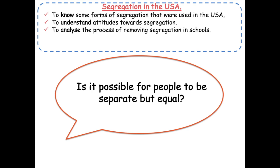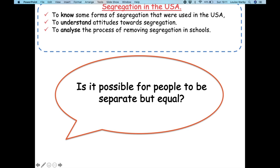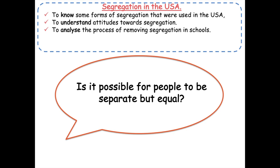To kick this all off, we are having a look at what America was like before the civil rights movement. Our title for today is segregation in the USA. We want to know some forms of segregation used in the USA, understand the attitudes towards segregation, and analyse the process of removing segregation particularly in schools, as this was a major step for the civil rights movement before it took full force in the 50s and 60s.